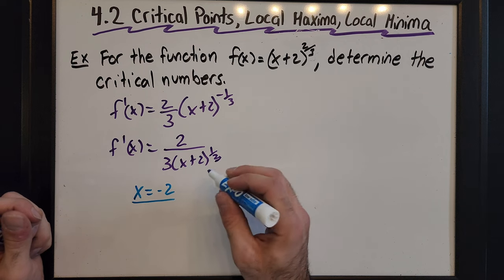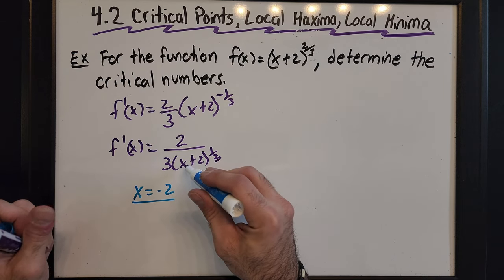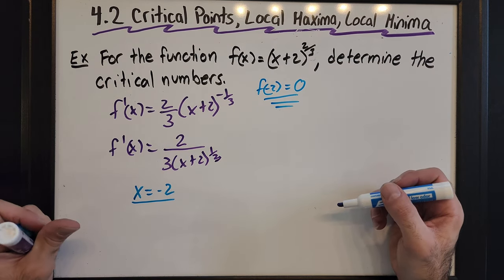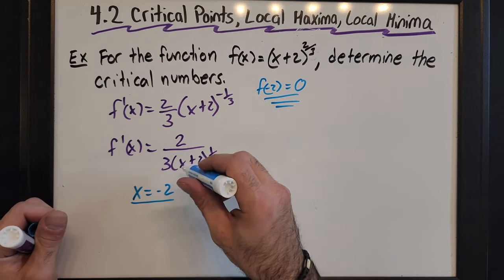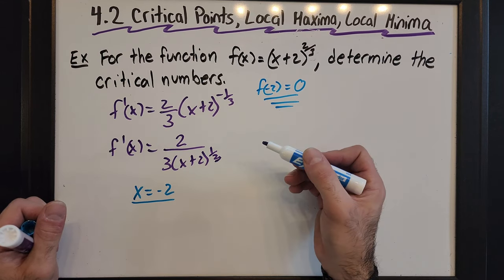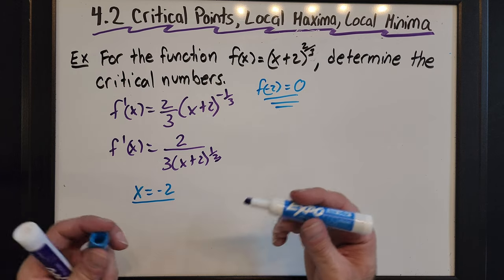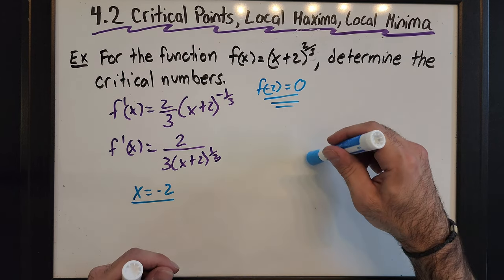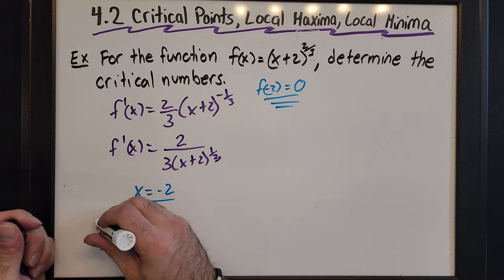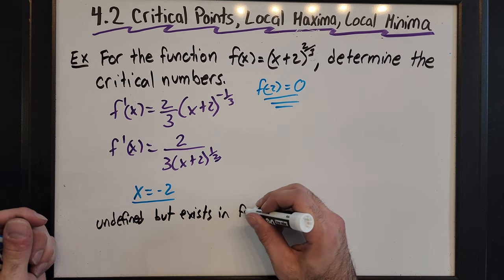This tells me there's a critical point at x equals negative 2, because the first derivative is undefined there. Even though it's undefined in the first derivative, I need to check whether it exists in the domain of the original function. Plugging in: f(−2) equals zero, so it does exist. Just because it's undefined in the derivative doesn't mean it's not a critical point — if it exists in the domain of f(x), then it is a critical point and something's going on there.